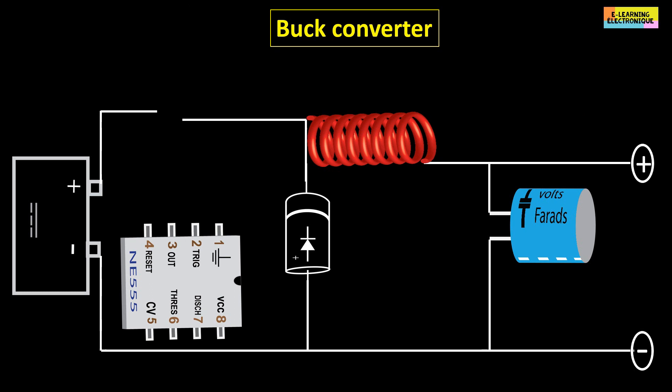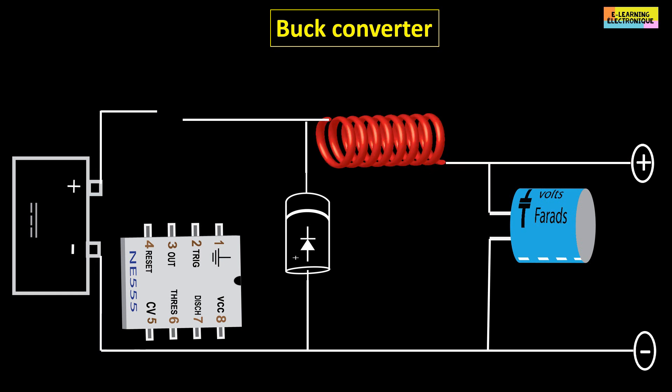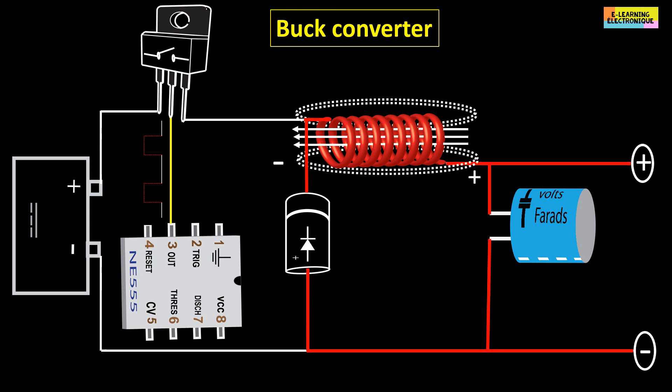The operating principle of the buck converter is as follows. When the MOSFET is in closing mode, the coil will oppose at the beginning to the current flow. At its terminals, the polarity is reversed in relation to the current source. It will store energy in electromagnetic form. When the MOSFET is in open mode, the polarity at the coil terminal will be reversed. The diode becomes conductive. The energy stored in the coil is restored in the circuit.